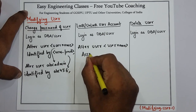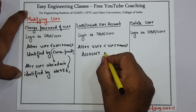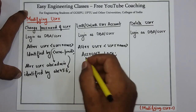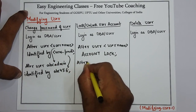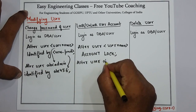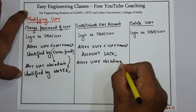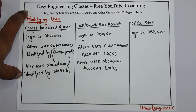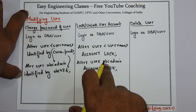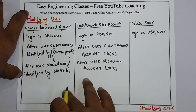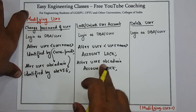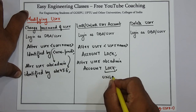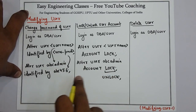Then use the keyword ACCOUNT and pass the value LOCK. For example, to lock abcadmin, write: ALTER USER abcadmin ACCOUNT LOCK. Once this query is fired, the user abcadmin will be prevented from accessing the database objects. To unlock the user, simply replace LOCK with UNLOCK; the rest of the statement remains the same.